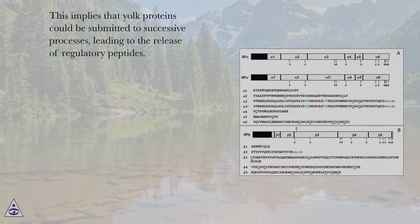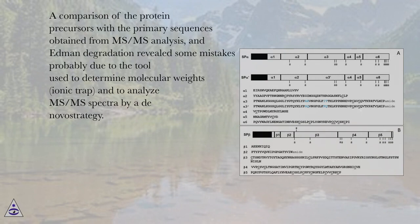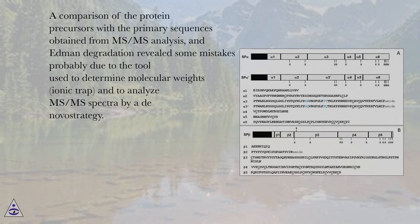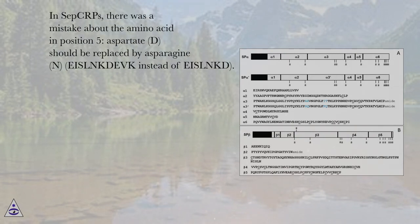This implies that yolk proteins could be submitted to successive processes leading to the release of regulatory peptides. A comparison of the protein precursors with the primary sequences obtained from MS-MS analysis and Edman degradation revealed some mistakes, probably due to the tool used to determine molecular weights (ionic trap) and to analyze MS-MS spectra by de novo strategy. In sep-CRPs, there was a mistake about the amino acid in position 5: aspartate (D) should be replaced by asparagine (N), given the similarity of their ionic masses.